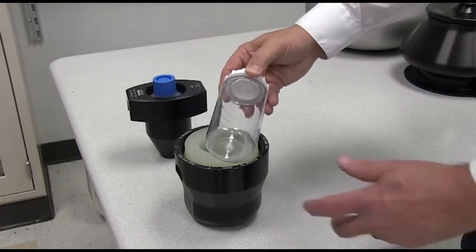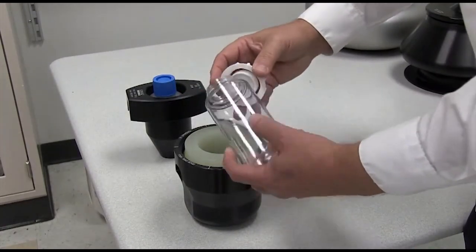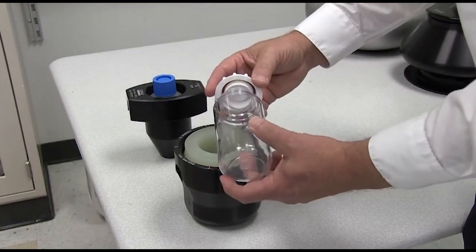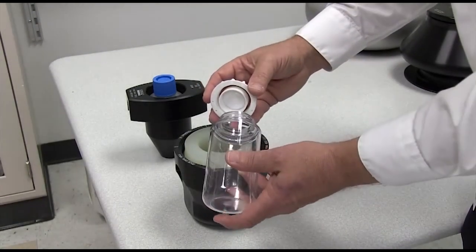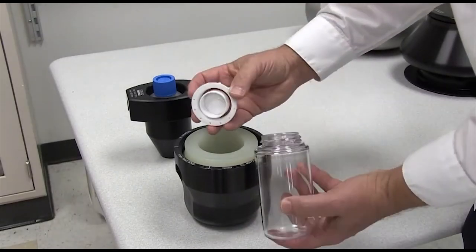And this is a centrifuge bottle. You can see it's made out of a plastic capable of handling at high speed. And it has even a gasketed cap so that the actual liquid that's in there helps contain it.